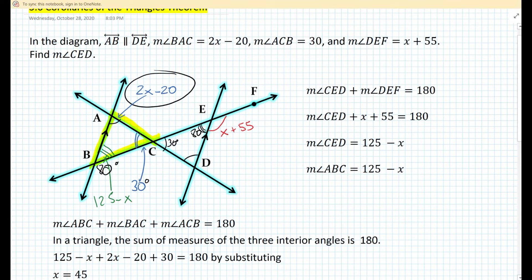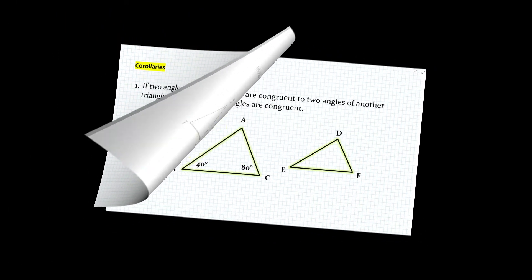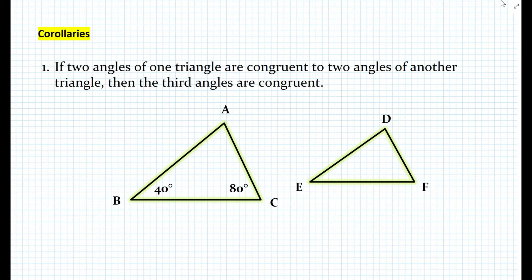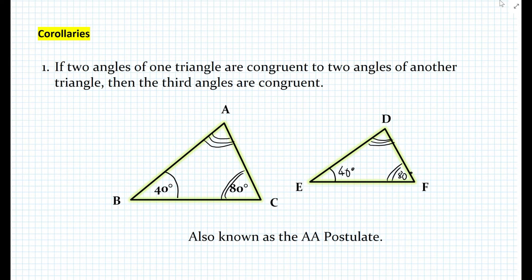Basically, if two angles of a triangle are congruent to two angles of another triangle, then automatically the third angles must be congruent as well. That is also referred to as the AA postulate, and it emerges from the theorem that the sum of the measures of the three interior angles of a triangle is 180. Because we know if two angles are 30 and 80, the third must be 70. In a proof, it's totally okay to write AA postulate as a reason.